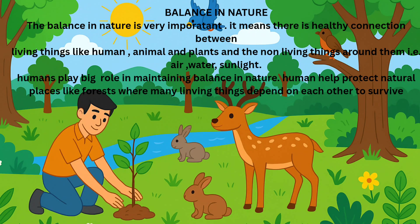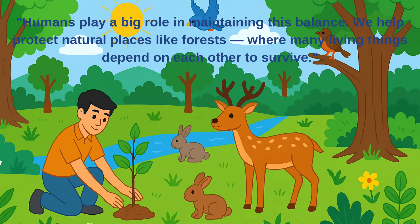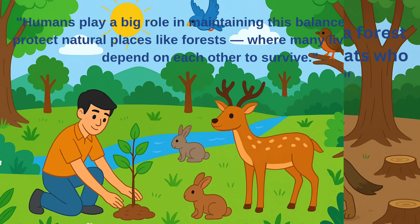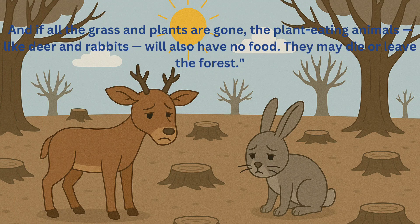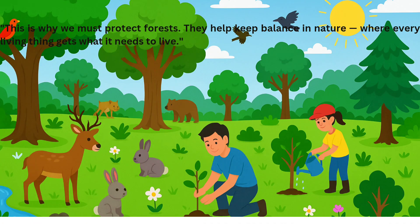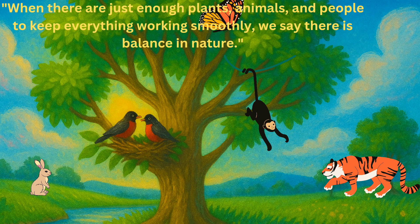The balance in nature is very important. It means there is a healthy connection between living things like humans, animals, and plants and the non-living things around them like air, water, and sunlight. Humans play a big role in maintaining this balance. We help protect natural places like forests where many living things depend on each other to survive. For example, if the number of rabbits in a forest goes down, animals like jackals and wild cats who eat them will struggle to find food. And if all the grass and plants are gone, plant-eating animals like deer and rabbits will also have no food. They may die or leave the forest. This is why we must protect forests — they help keep balance in nature, where every living thing gets what it needs to live.